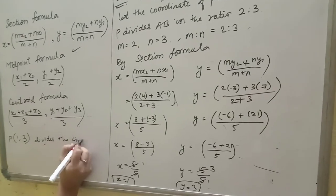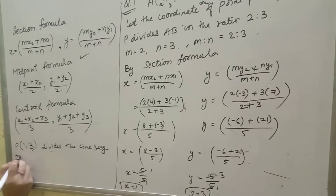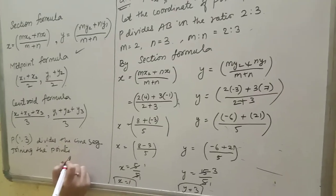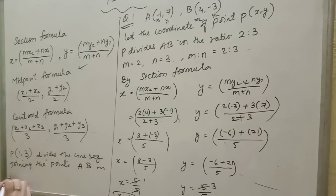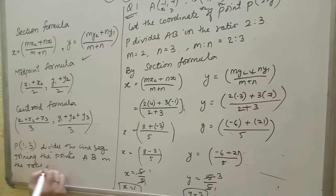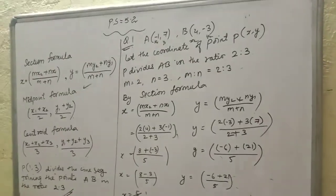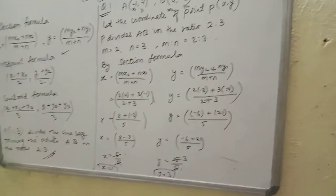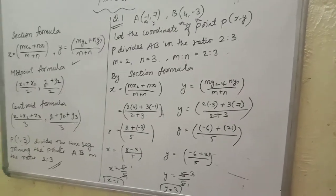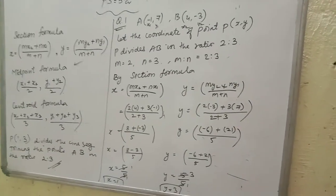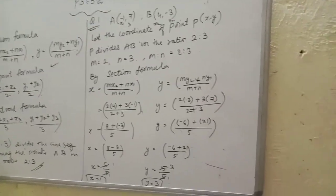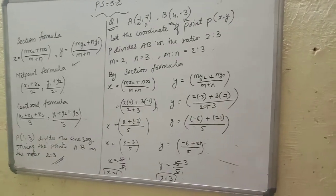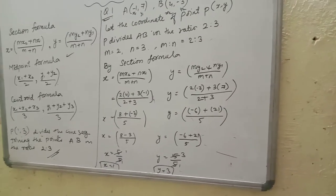P is (1, 3), which divides the line segment joining A and B in the ratio 2:3. Using this section formula, you will similarly have to solve Question Numbers 2, 3, and 4. Now I will let you know about Question Number 4.